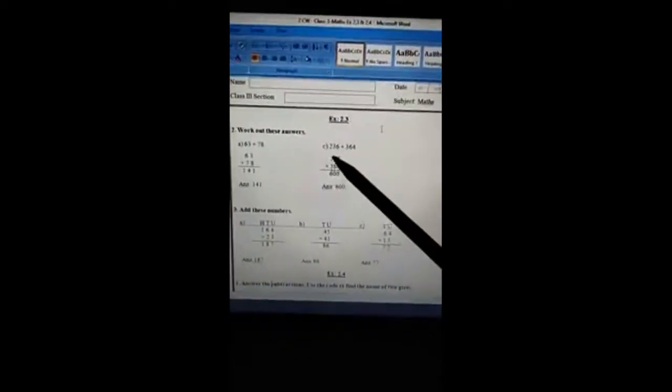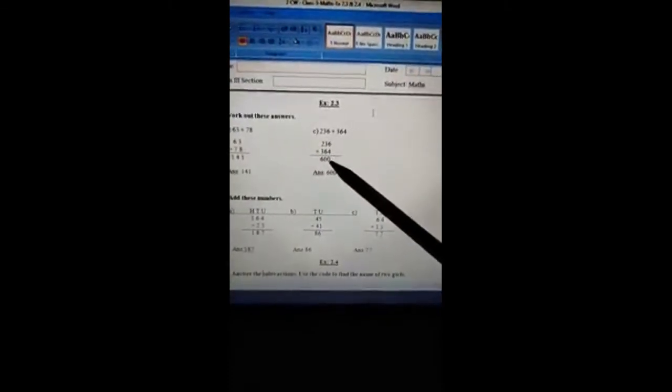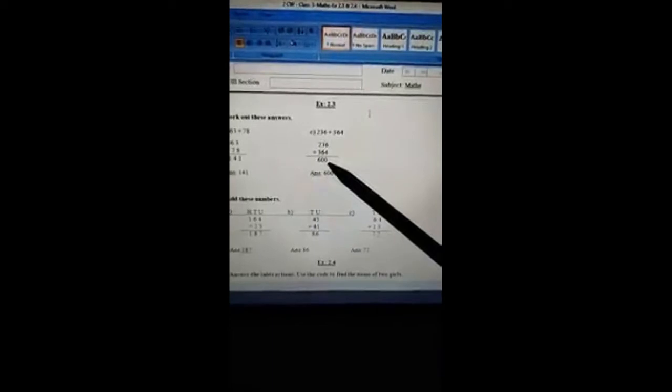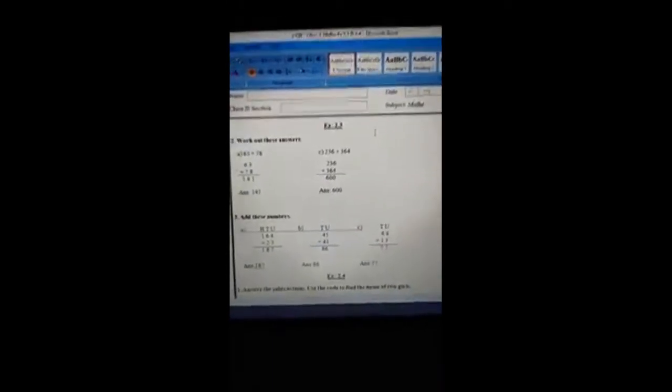Number C: 236 plus 364. So 236 plus 364, the total will be 600. Here the answer will be 600, simple additions. Number 3 is also addition, not subtraction, just addition.